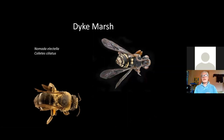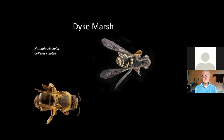Right in Alexandria there's Dyke Marsh, basically a combination of old dump and old gravel pit in the water that's recovering. The park service has been doing a good job, but it's surrounded by urban areas and was super beat up. Yet people did some intensive collecting on some of these plants, and there are globally rare bees coming out of that. The bee on the right, Nomata electella, was unknown in terms of the male — there was literally a handful of specimens — and in Dyke Marsh there was a whole long series of males.